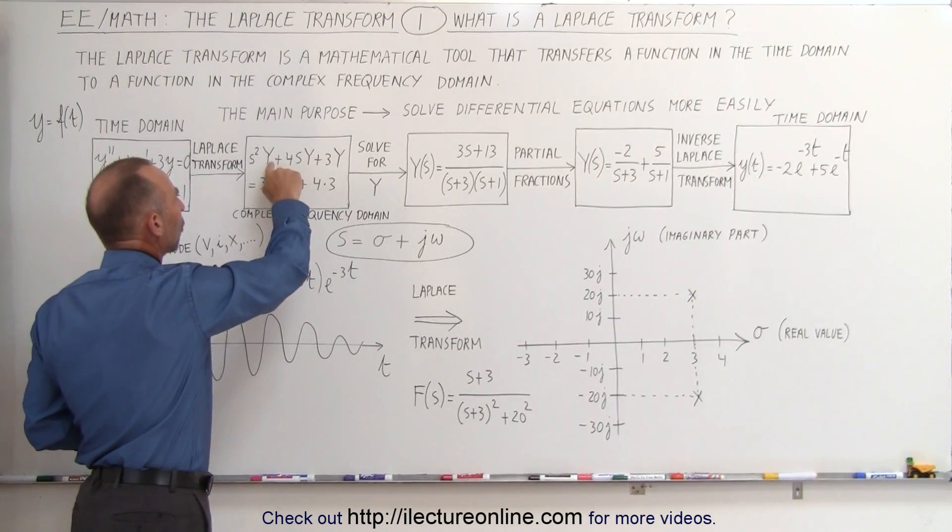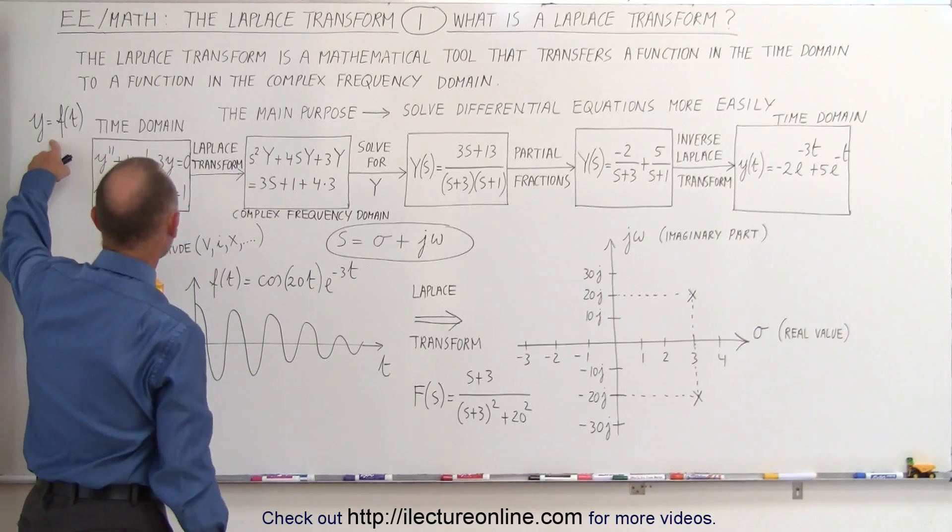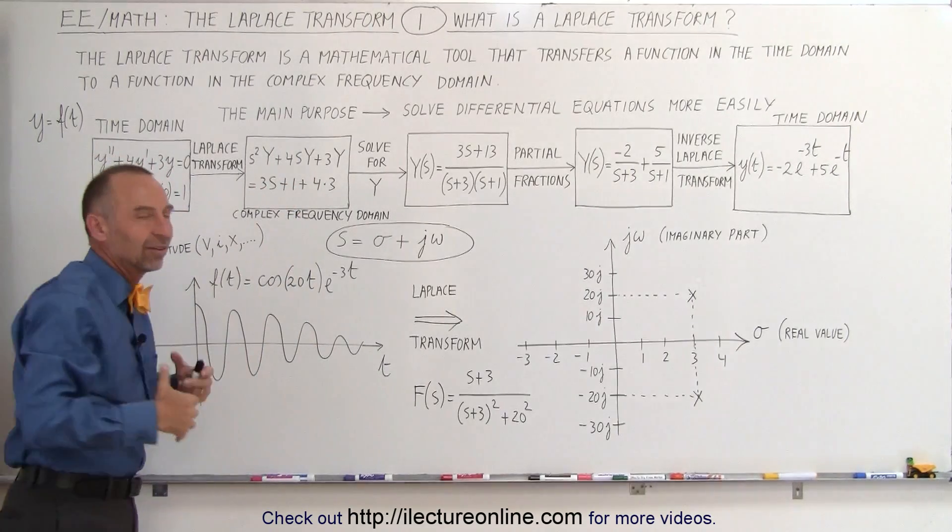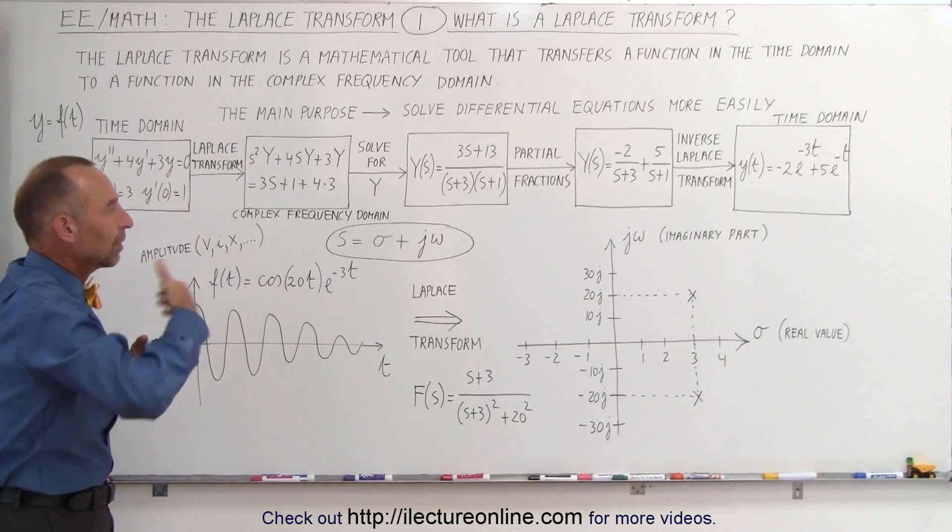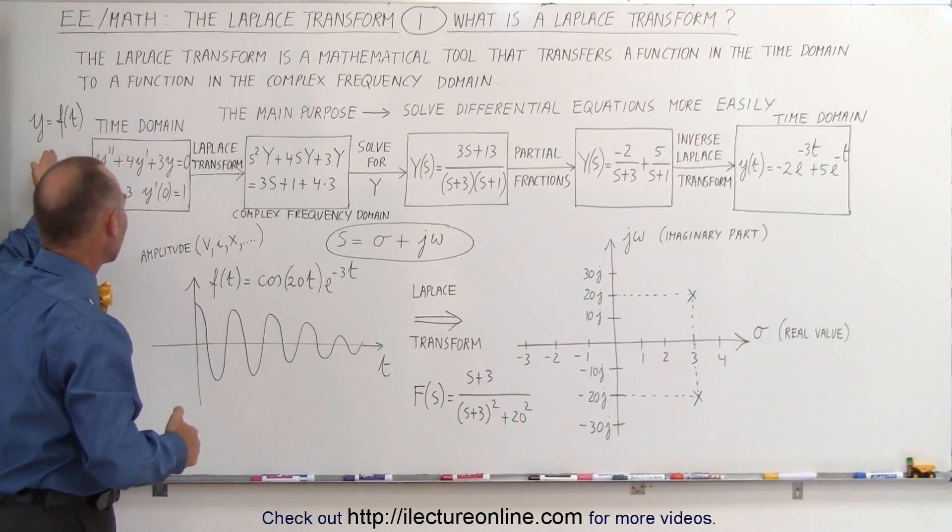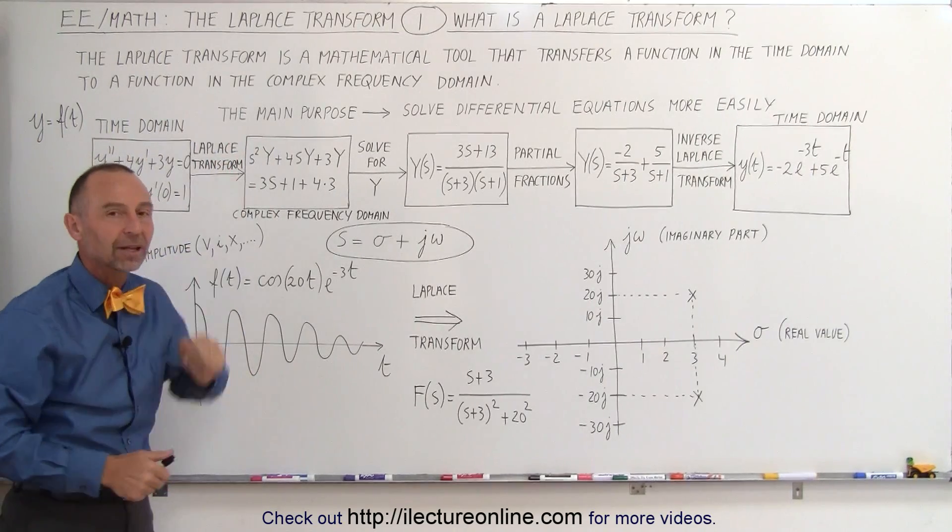Now what we do here is once we convert it like this, we're going to take this and solve that for y. Now notice, here we have the small letter y, there we have the big letter y. That's the typical notation. Once we take the Laplace transform of a small function f, it becomes a large capital letter f.